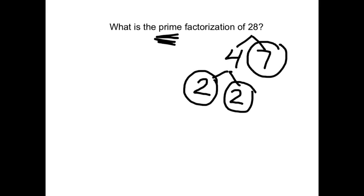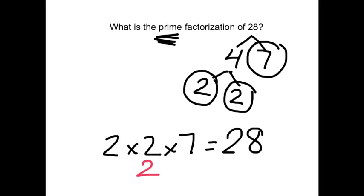So now you take these 3 prime numbers, 2 times 2 times 7, and that should equal 28. You can also write it with exponents as 2 squared times 7 equals 28. And because it has more than 2 factors, 28 is composite.